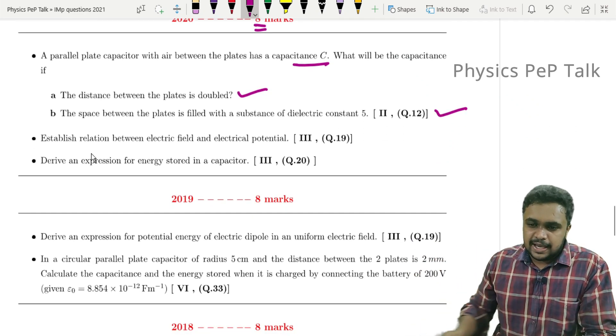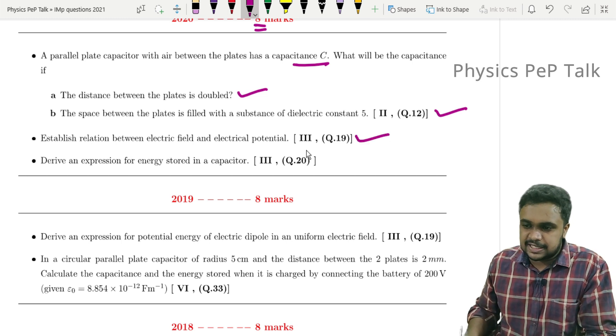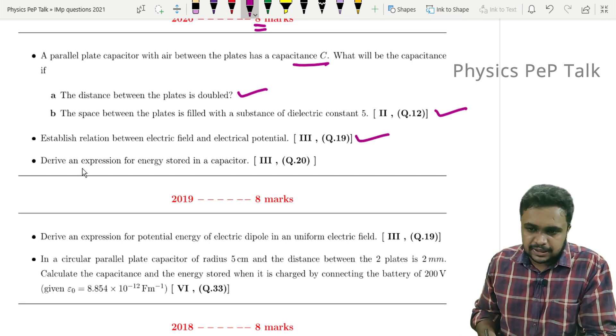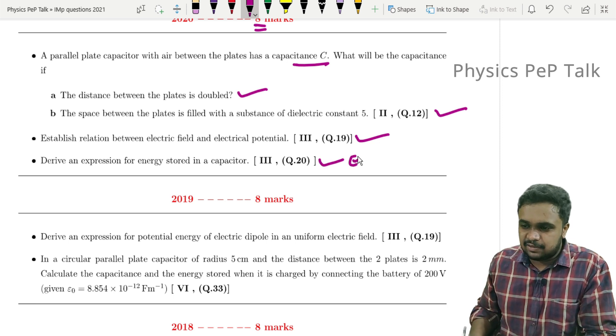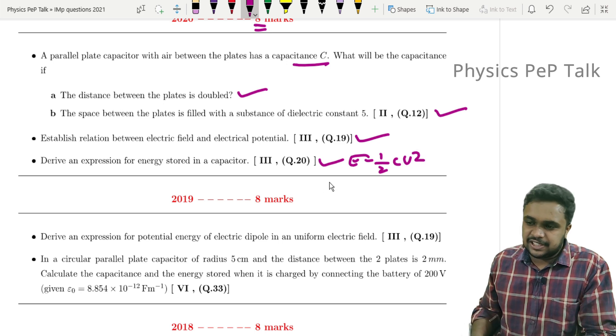This is asked for three marks. Derive an expression for energy stored in a capacitor, that is E = 1/2 CV² - this derivation was asked.